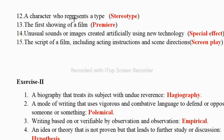Next: a character who represents a type — that's called stereotype. Representing a type means showing a prejudice, so that's called stereotype. Next: the first showing of a film — you already know this one — it's called premiere. Premiere means the first showing of a film or any drama.